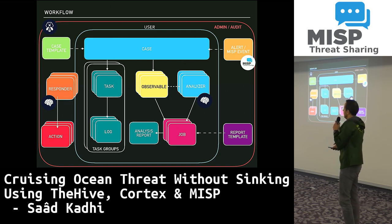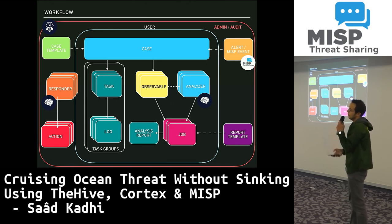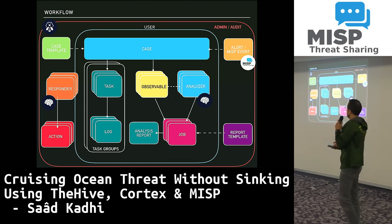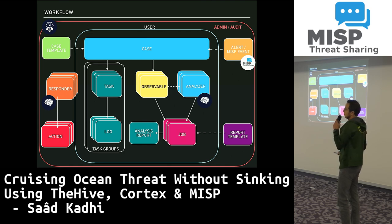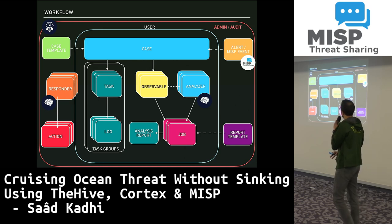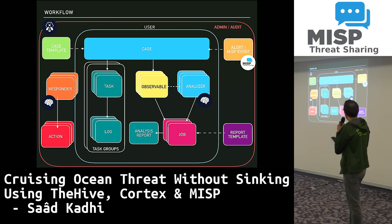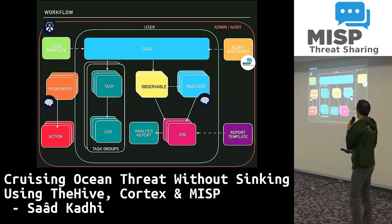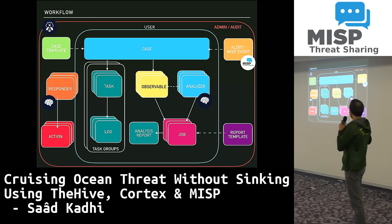TheHive is vertically and horizontally scalable, meaning you can run as many instances as you'd like, and it uses Elasticsearch for storage so you can add as many nodes as needed. For creating cases, you can rely on alerts from different sources — but also, and most certainly, from MISP.